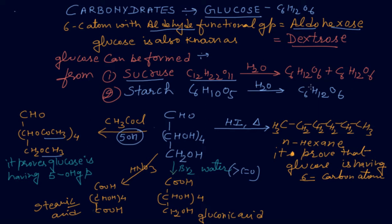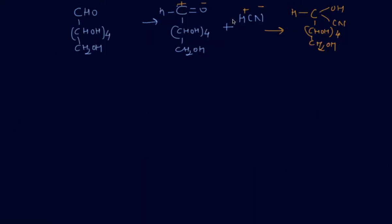The next reaction is with hydrogen cyanide. Glucose has an aldehyde group, that is a carbonyl group. When reacted with hydrogen cyanide, a nucleophilic reaction takes place, giving OH and CN groups — this product is known as cyanohydrin. We have covered this earlier in the aldehydes and ketones chapter.